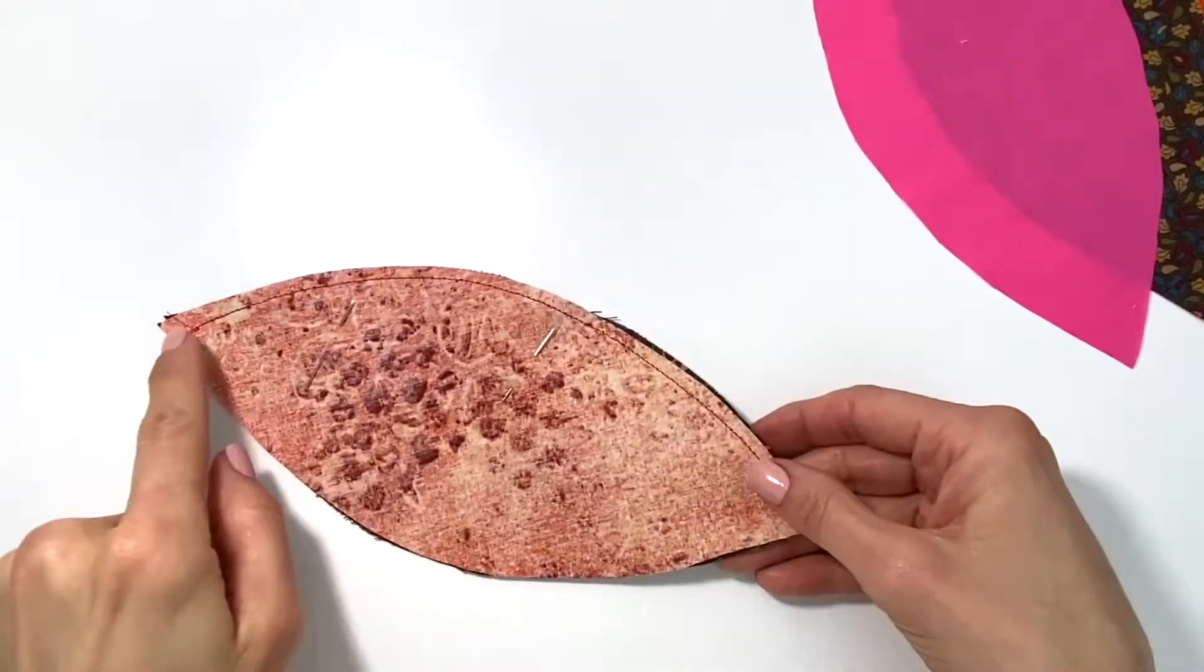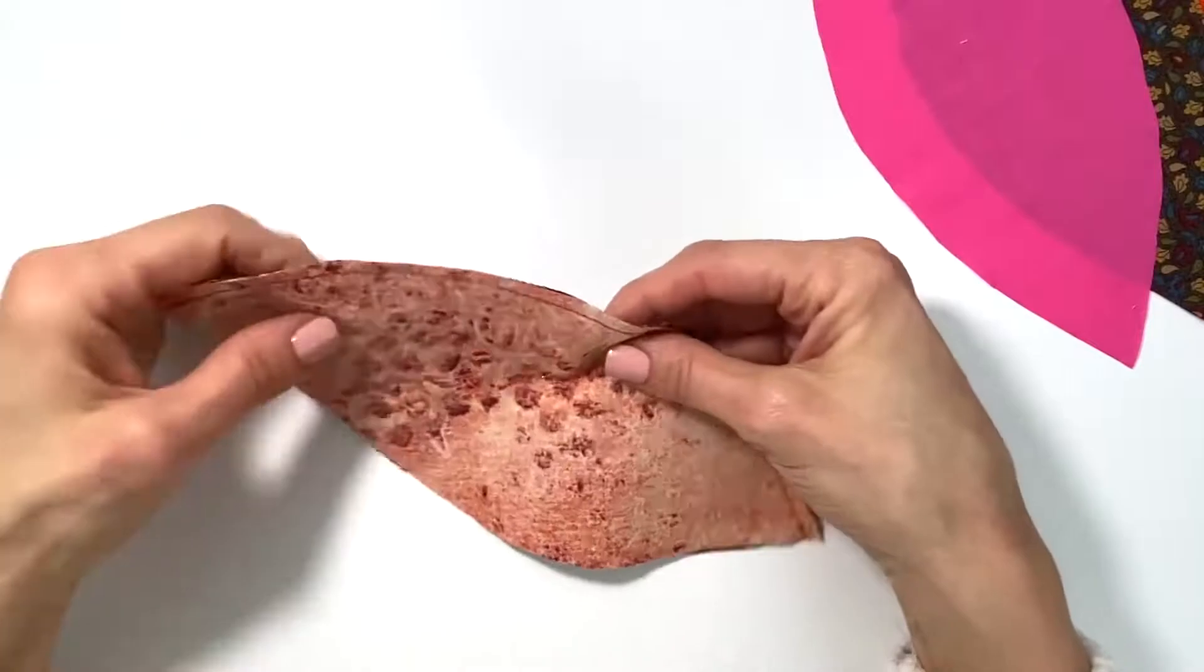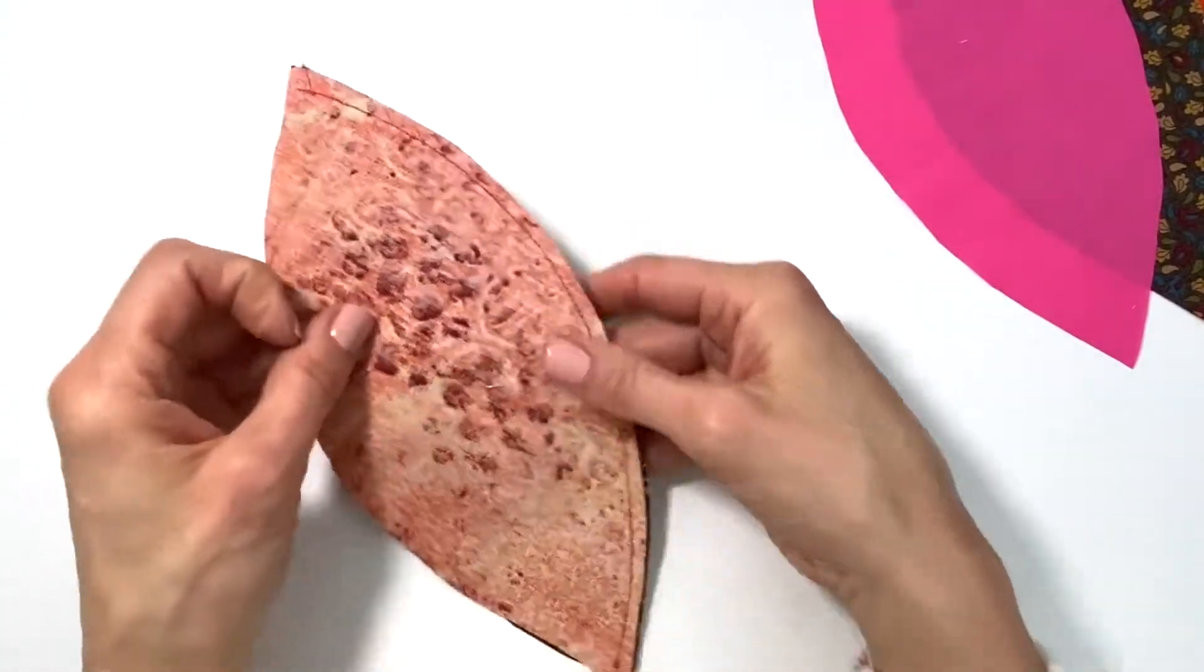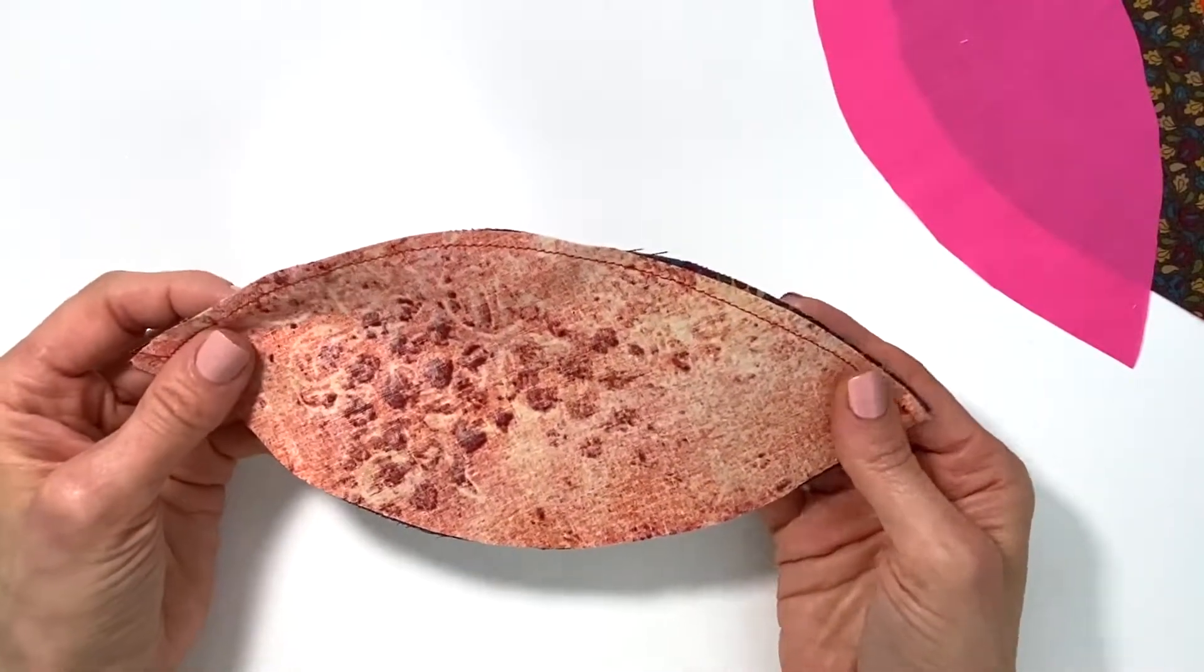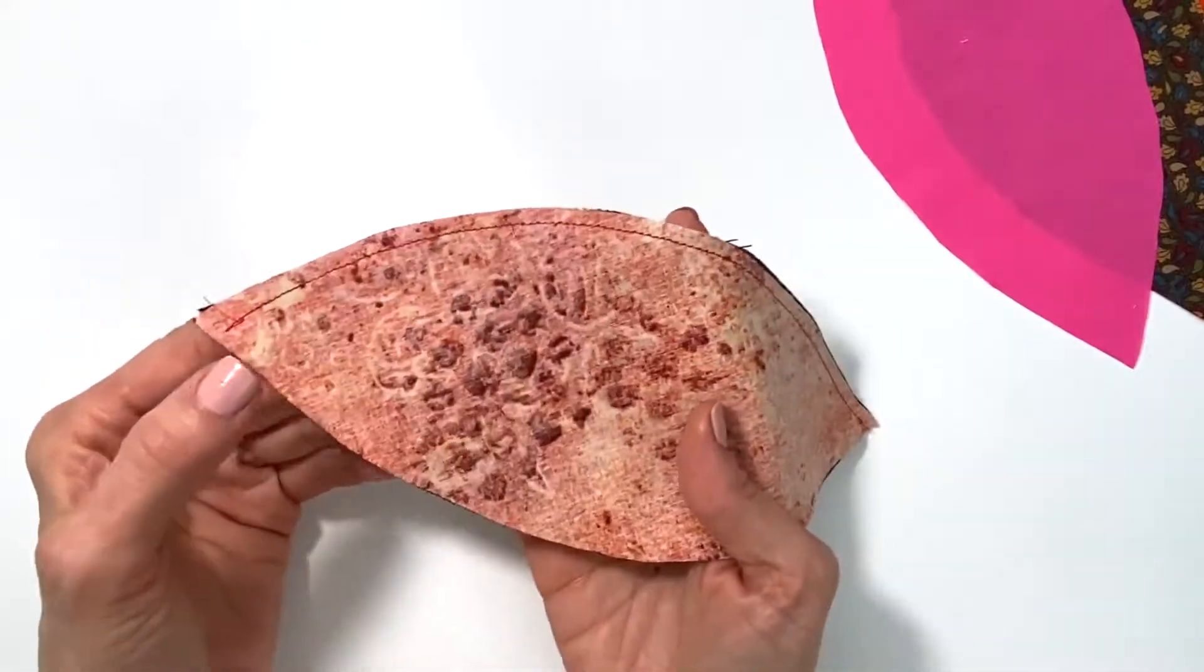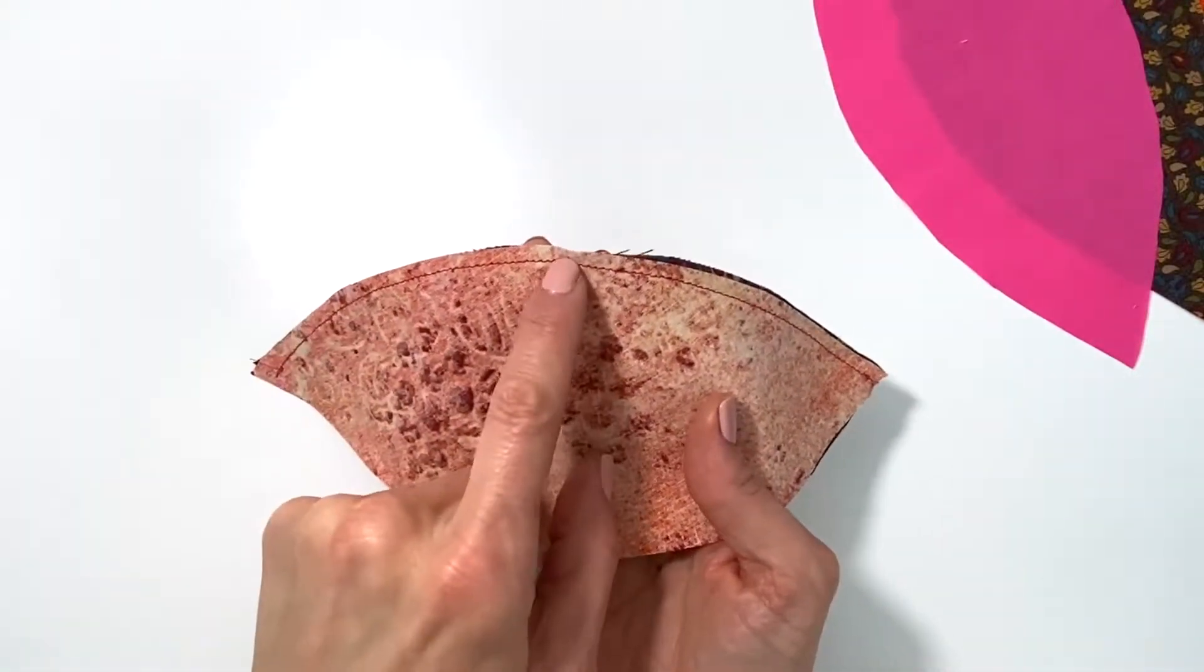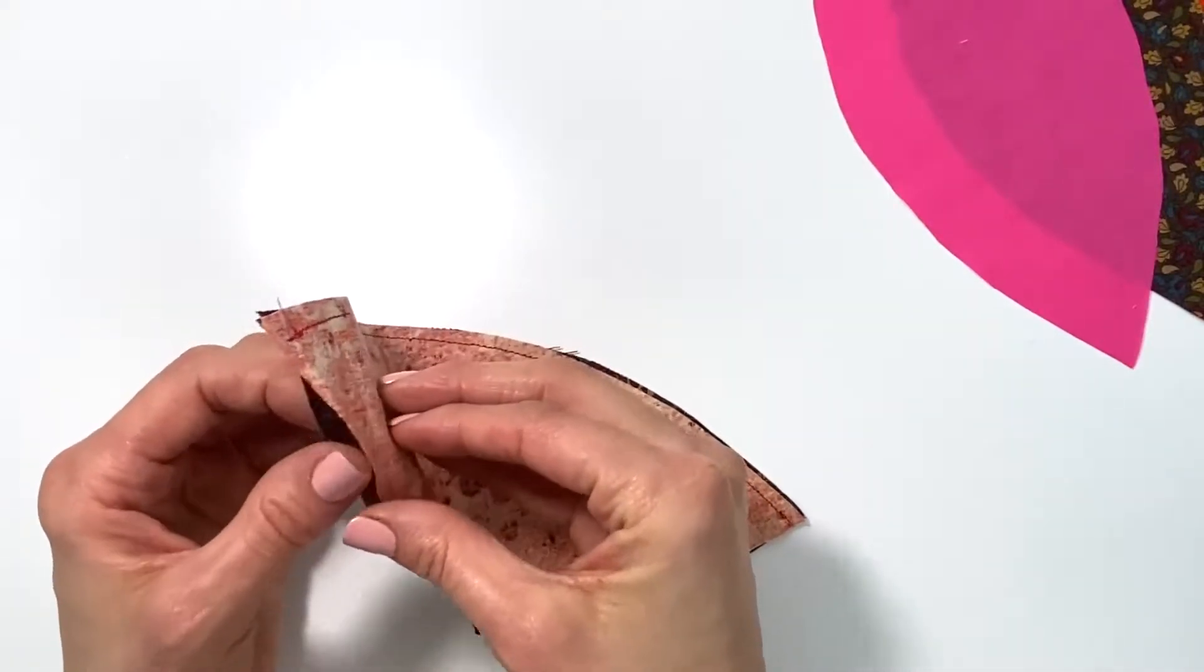I've gone ahead and sewn around keeping about a quarter of an inch seam allowance. You can leave more if you'd like, but then you can also trim it off after. Every time you leave a larger seam allowance you're always supposed to trim it. If you become really good at leaving about a quarter of an inch, then you're good, there's no trimming.